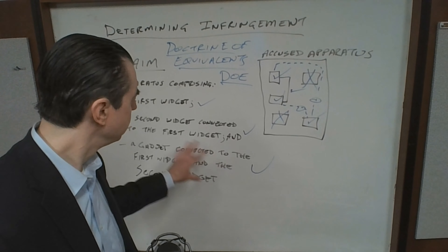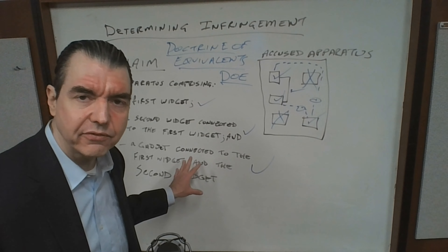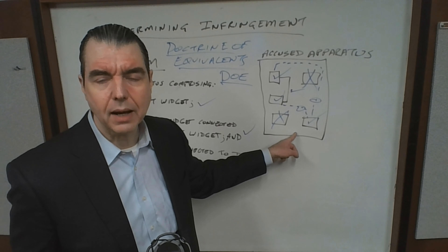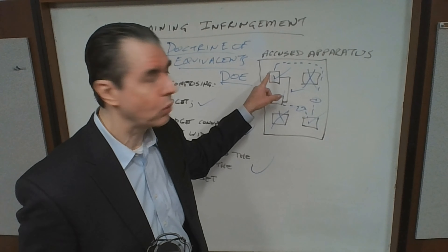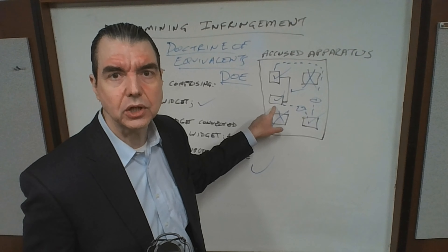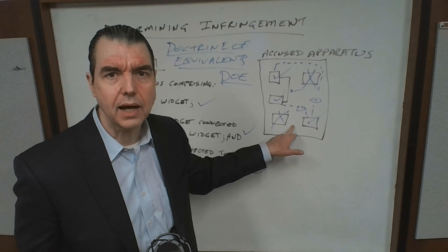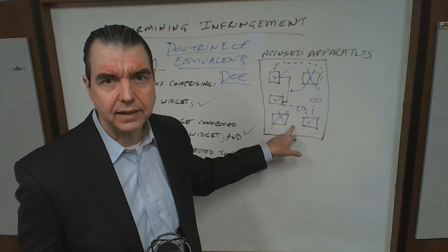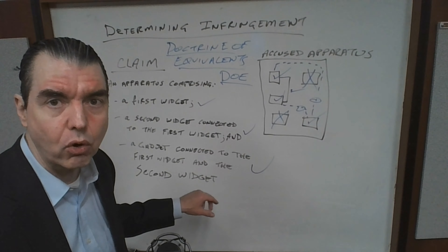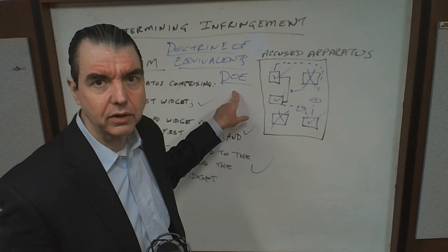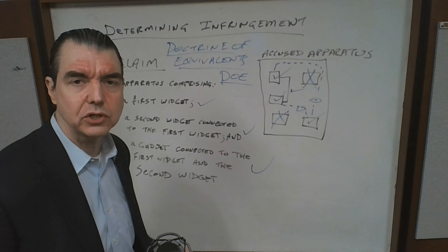It doesn't have a physical connection, and it may be that the way the claim is interpreted it doesn't need to be physical — but we'll talk about that in another video on claim interpretation. Looking at it from the standpoint of doctrine of equivalence, there still is a connection: although it's not a physical connection, there's a wireless connection from the gadget to the first widget and the second widget. I would argue that the third limitation is present in the accused apparatus, doing substantially the same thing in substantially the same way, and therefore it's still infringing under the doctrine of equivalence.